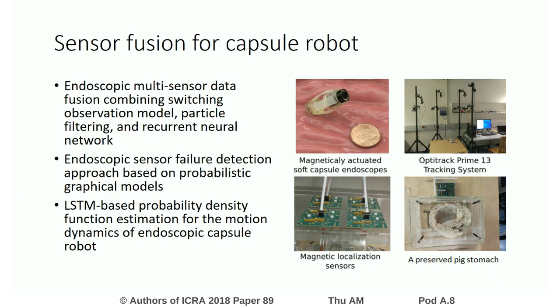To the best of our knowledge, our method is the first multi-sensor data fusion approach that combines a switching observation model, a particle filter, and a recurrent neural network developed for endoscopic capsule robot and handheld endoscope localization.